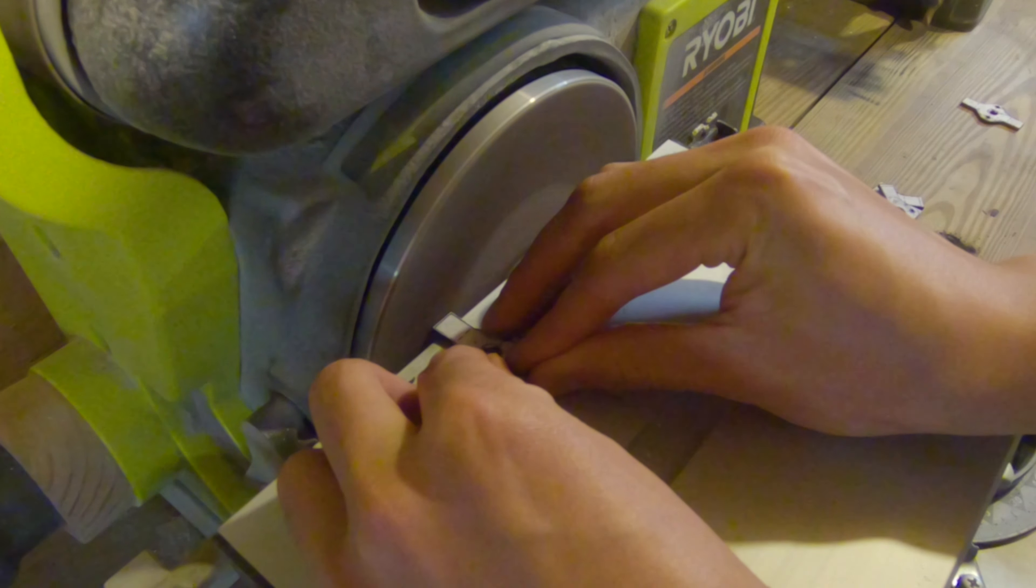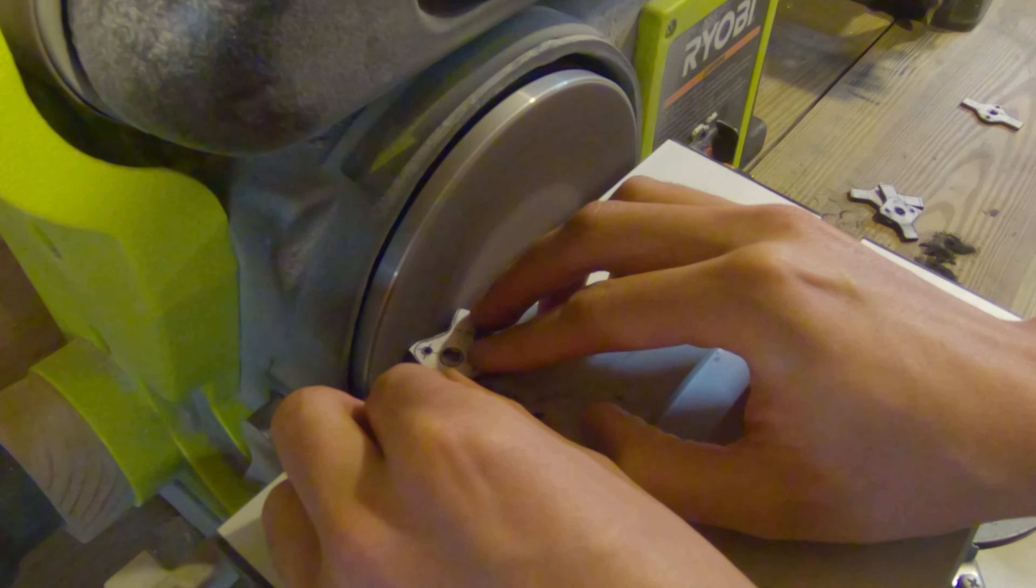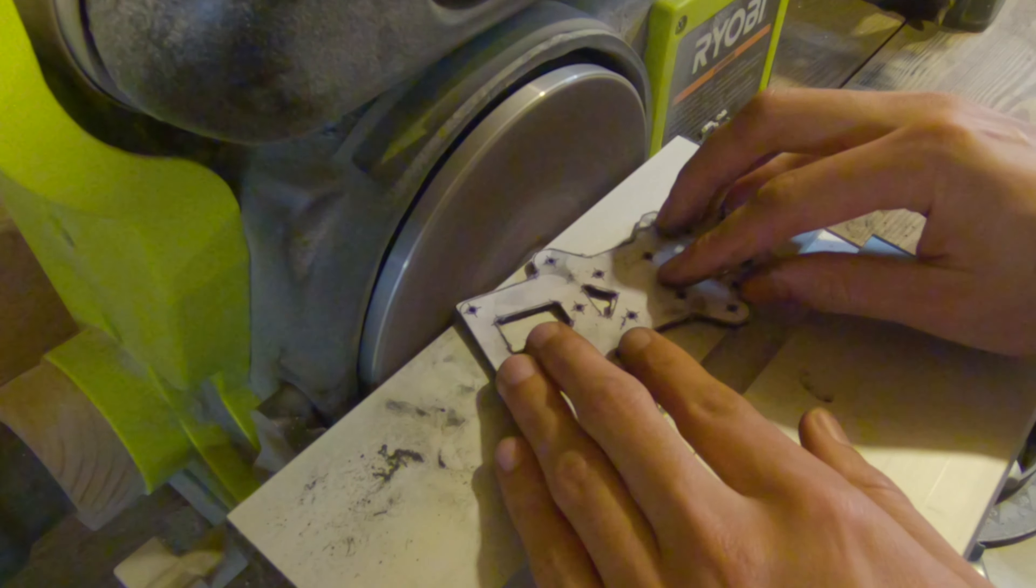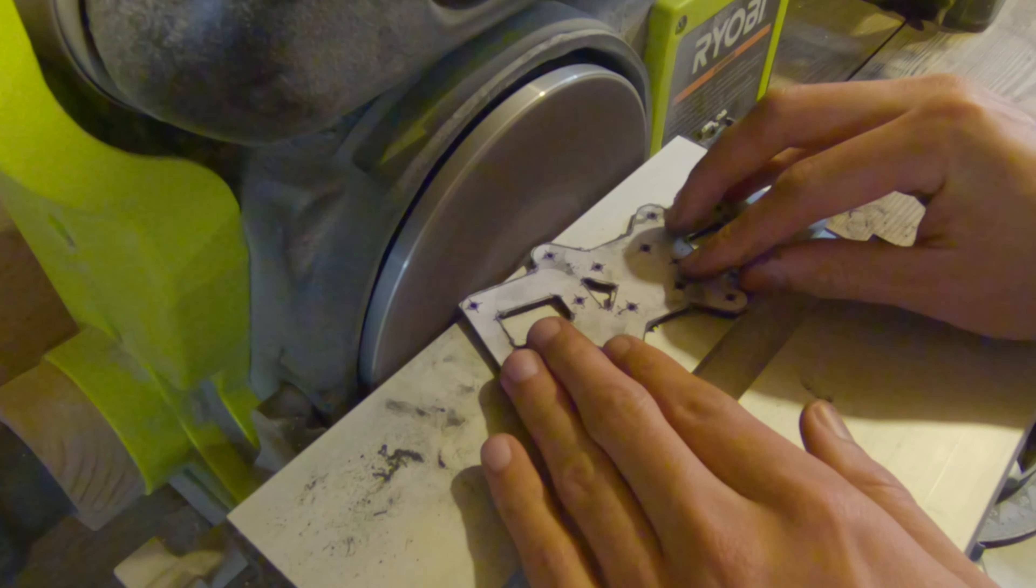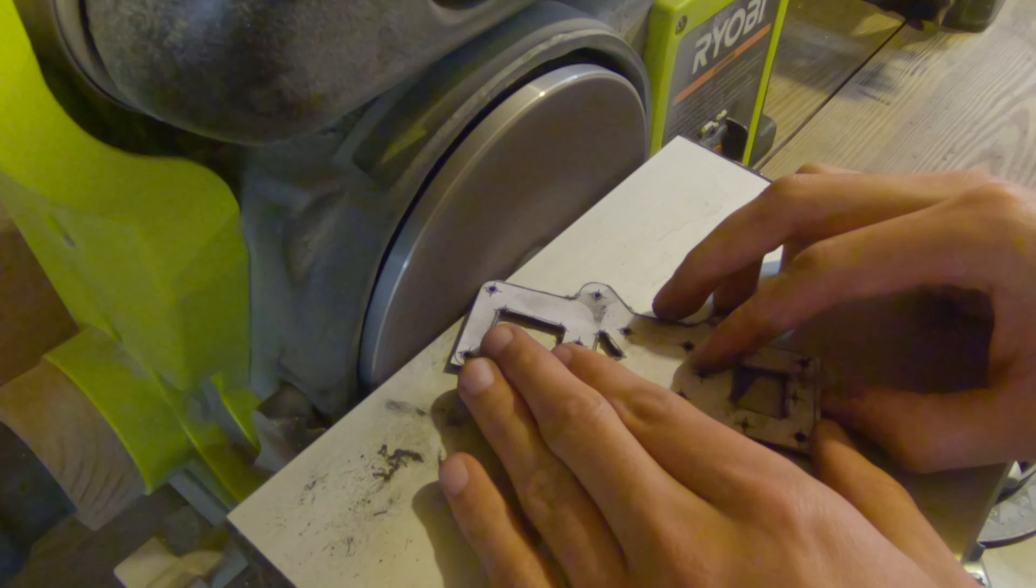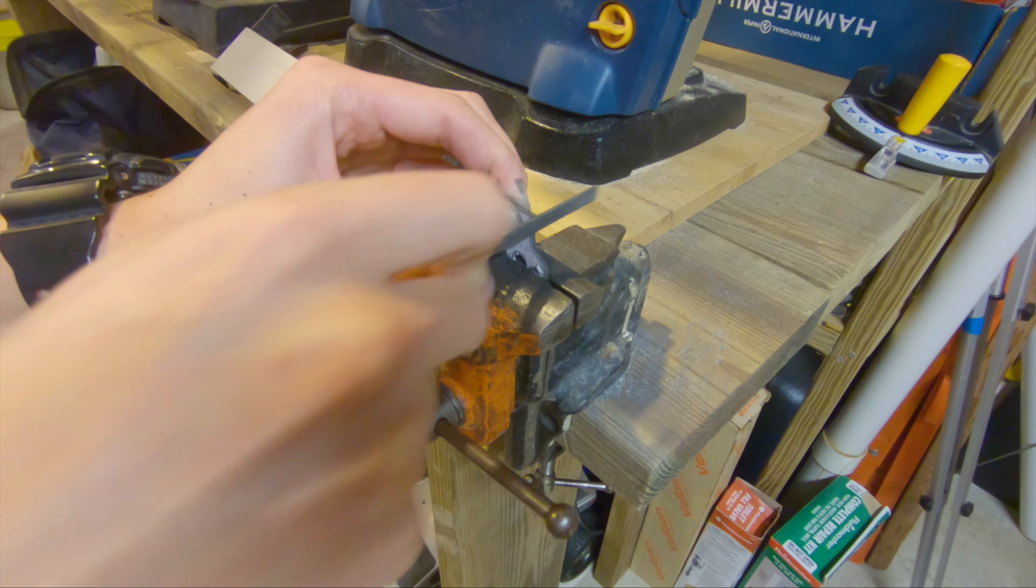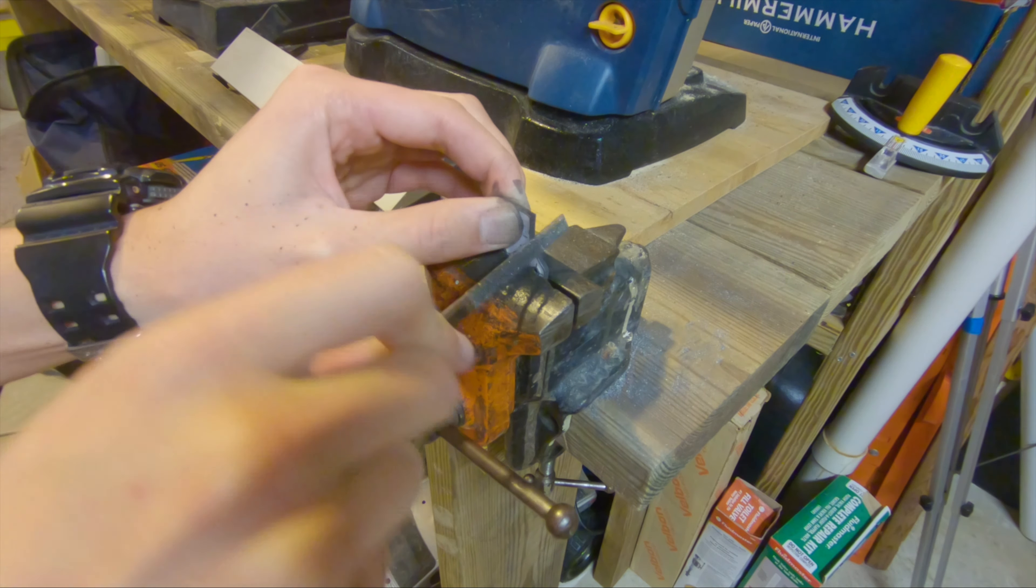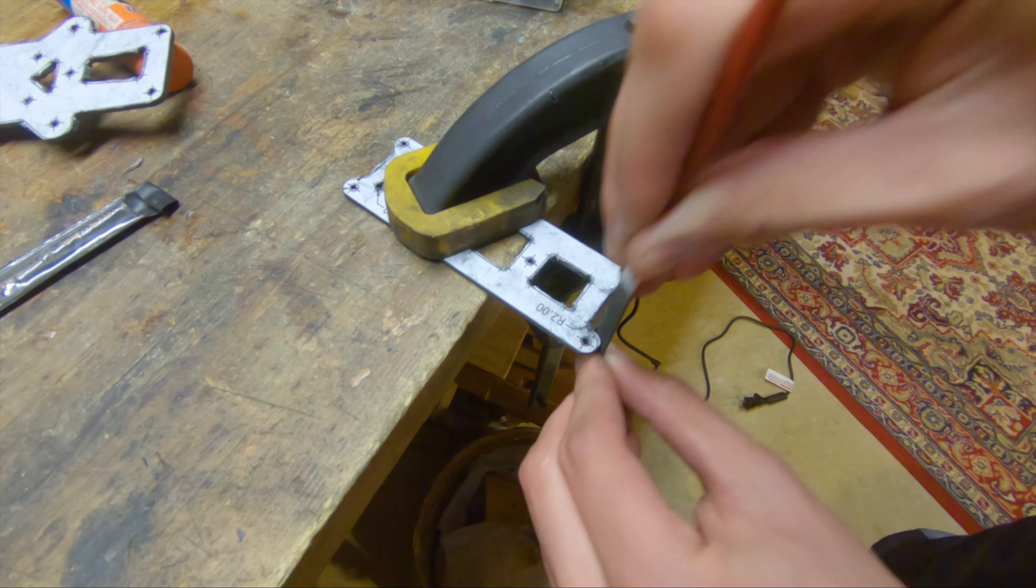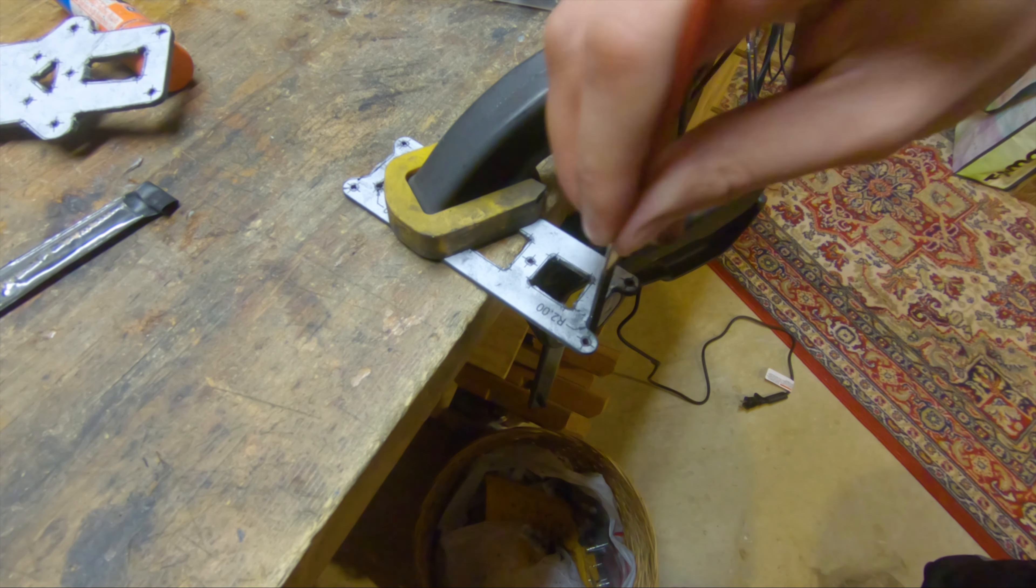I'm using a disk sander to sand down to the line where I can, and then everywhere that I can't reach with the Dremel or the disk sander I have to do it by hand with a set of files.